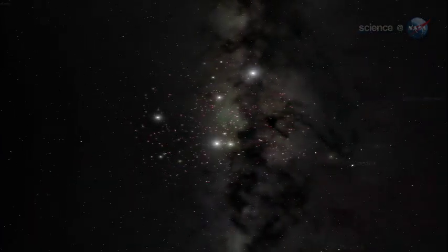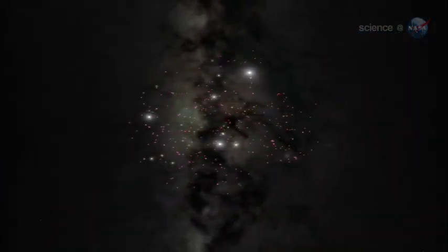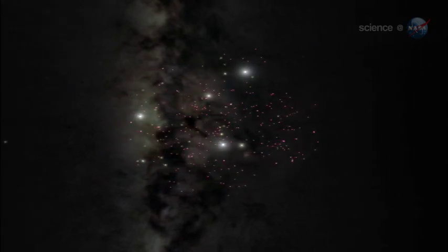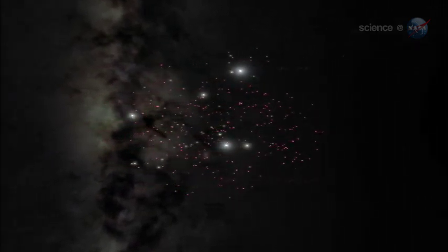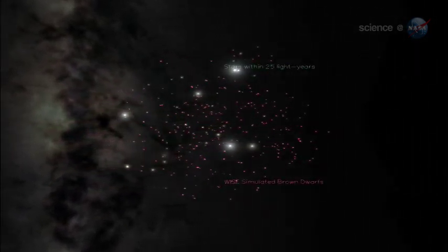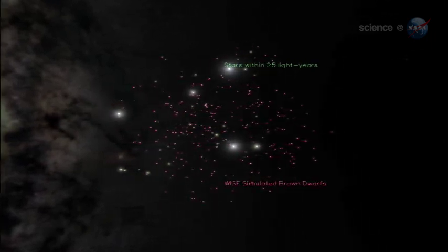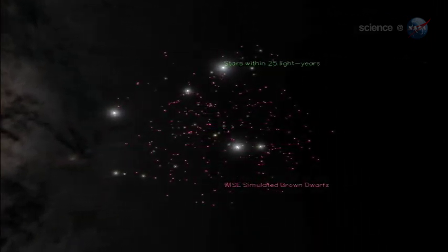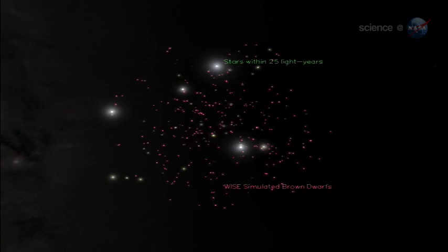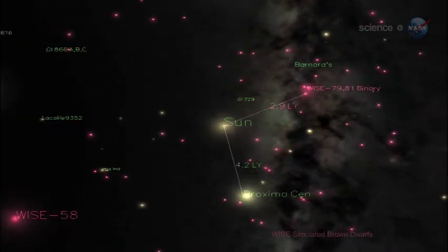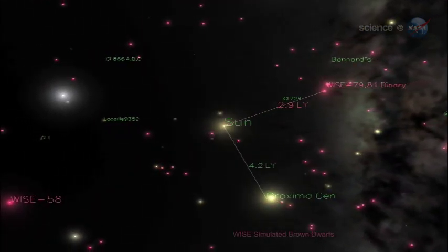Future space travelers might consider visiting Y-dwarfs for a closer look. At a distance of less than 40 light-years, these stars are relatively nearby. Finding these objects so close to our sun is like discovering there's a hidden house on your block that you didn't know about, says Michael Cushing, a WISE team member at the Jet Propulsion Laboratory. It's thrilling to me to know that we've got neighbors out there, and maybe more yet to be discovered.